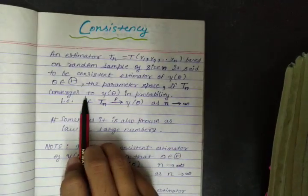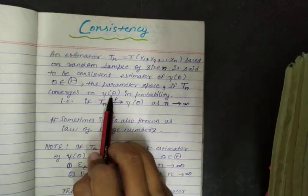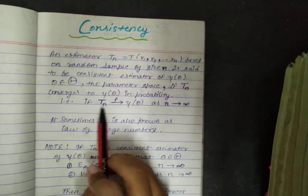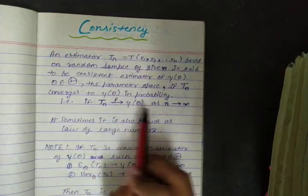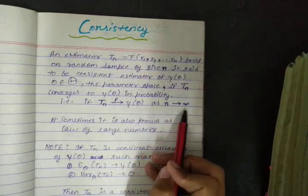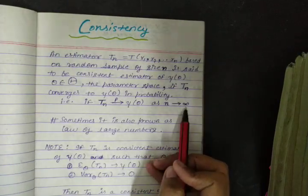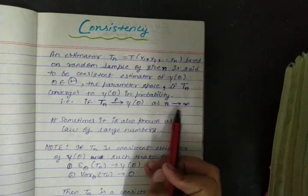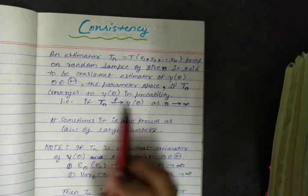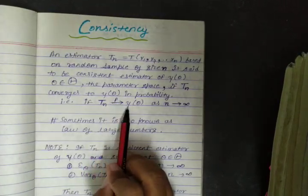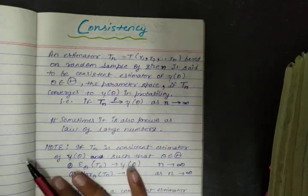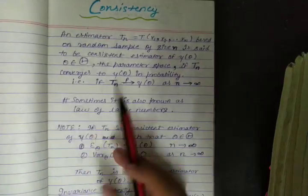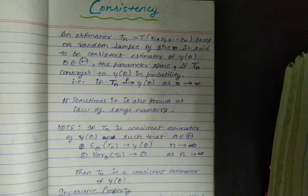Tn is a consistent estimator if Tn converges to gamma theta in probability as n tends to infinity. This is the case of consistency which will be used later.